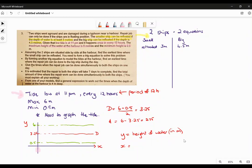We're doing question three of the worksheet I gave you out on Friday. We're talking about two ships going aground, and they're damaged by a typhoon in the near harbour. Repair jobs can only be done in a floating position.